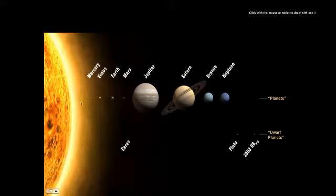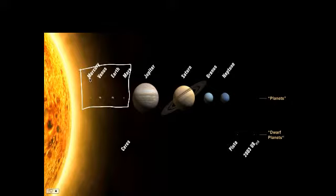This video is going to get into the specifics of the terrestrial planets, just as a summary of the things we've talked about in class. Before we begin, let's take a look at the order of the planets. Here are the four terrestrial planets, and they are Mercury, Venus, Earth, and Mars in order.